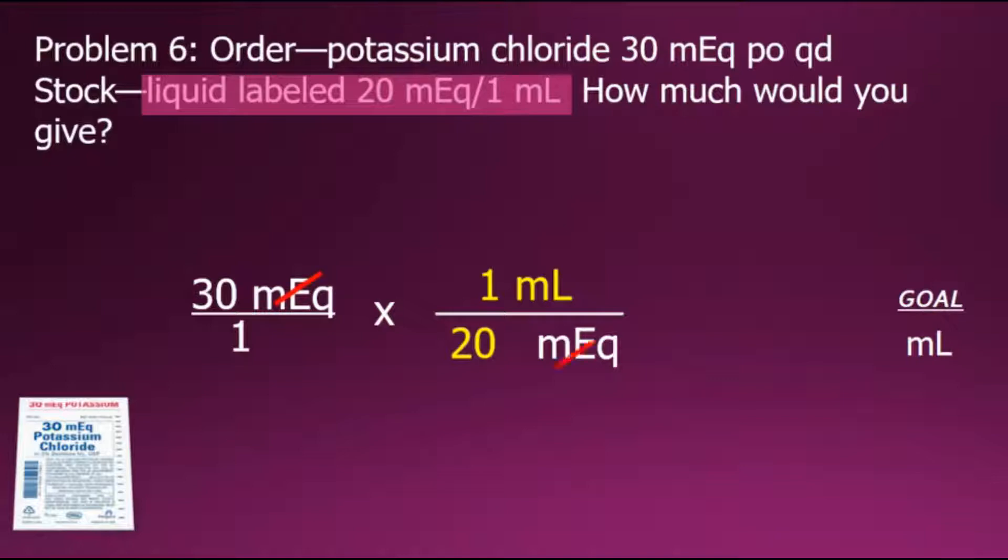Canceling out that common factor of milliequivalent, we will move forward with multiplying the numerators and the denominators with the results shown. Final step, we'll do the indicated division to simplify our answer, which is in the units that we set as our goal, milliliters, and 30 divided by 20 will give us a value of 1.5 milliliter for the dosage.